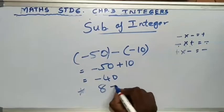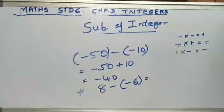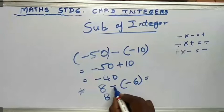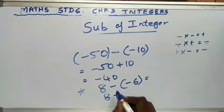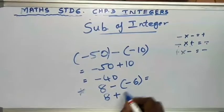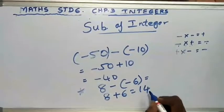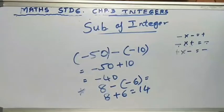One more example: 8 minus (minus 6). I write 8. Minus into minus is plus, so write plus 6. So 8 plus 6 — both sides positive, so add. 8 plus 6 is 14. Both had positive signs, so the answer is positive 14.